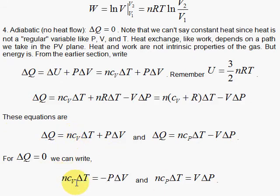When I set delta Q to be zero, I'll have NC sub V delta T is minus P delta V. And here, when delta Q is zero, I'll have NC sub P delta T is plus V delta P.